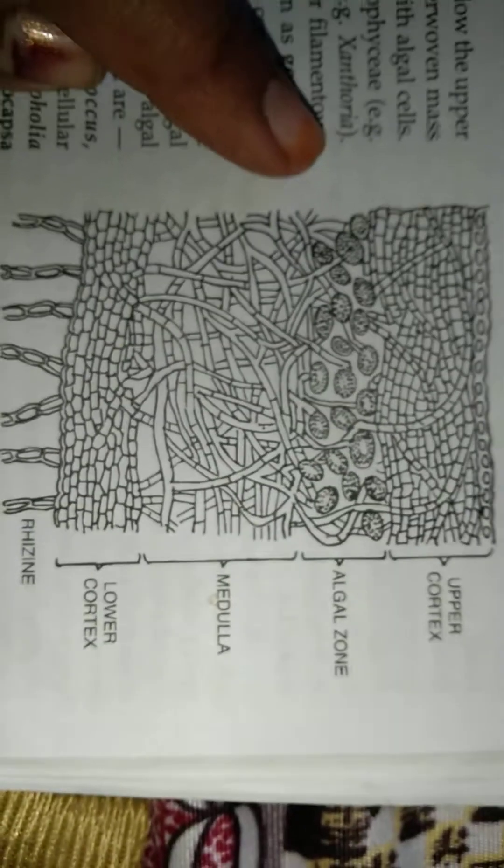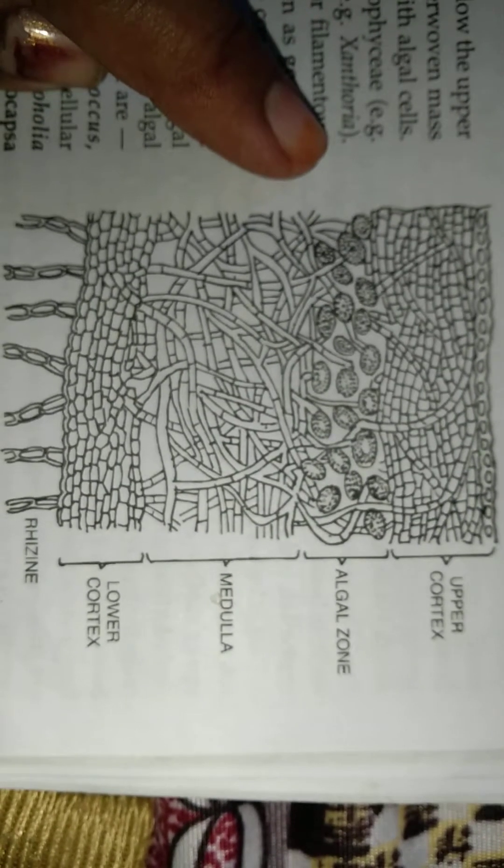Then the heteromerous type of lichen. This consists of the specific zone of the algae and fungi.